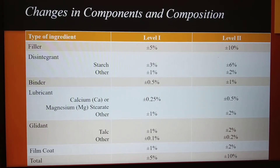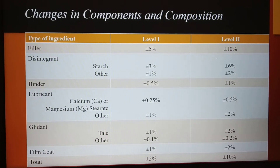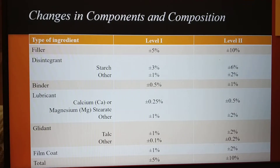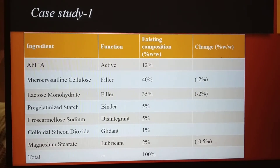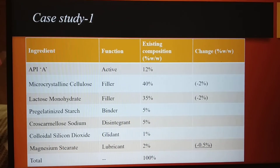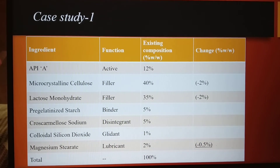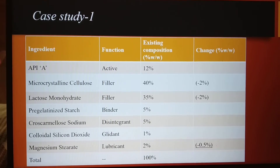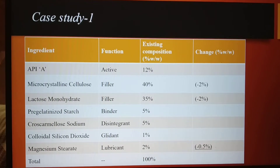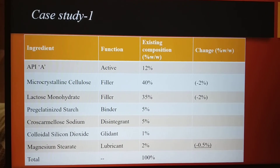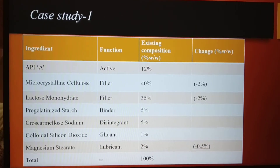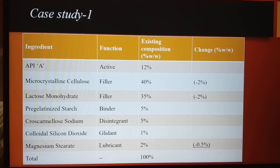Anything beyond Level 2 will be a Level 3 change as per SUPAC guidelines. Now we'll come to the case studies. In Case Study 1, you can see the percent change for microcrystalline cellulose is 2%, for lactose again 2%, and for magnesium stearate the change is minus 0.5%.